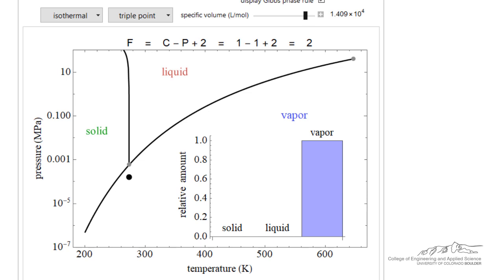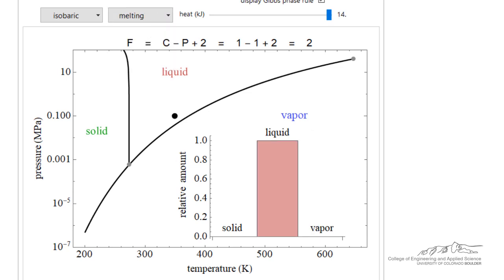and then we have the same behavior we just saw. We can also carry out a process isobaric, so let's look at melting. So we'll start with solid, and keeping the pressure constant, we'll heat up the solid, gets to the phase envelope, we start forming liquid first.